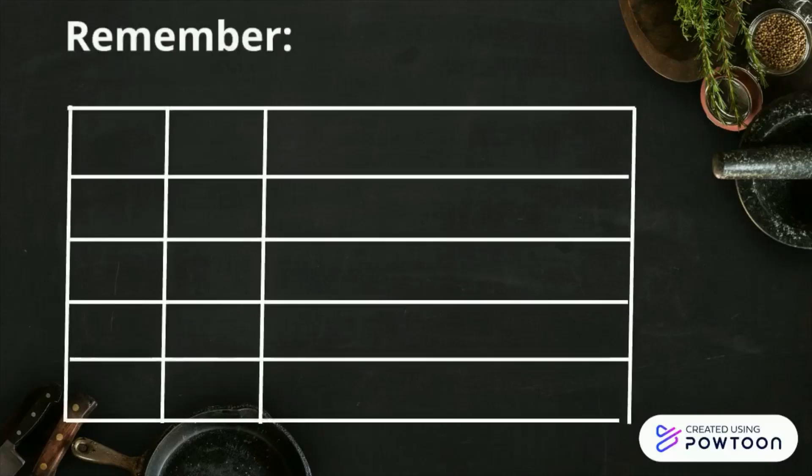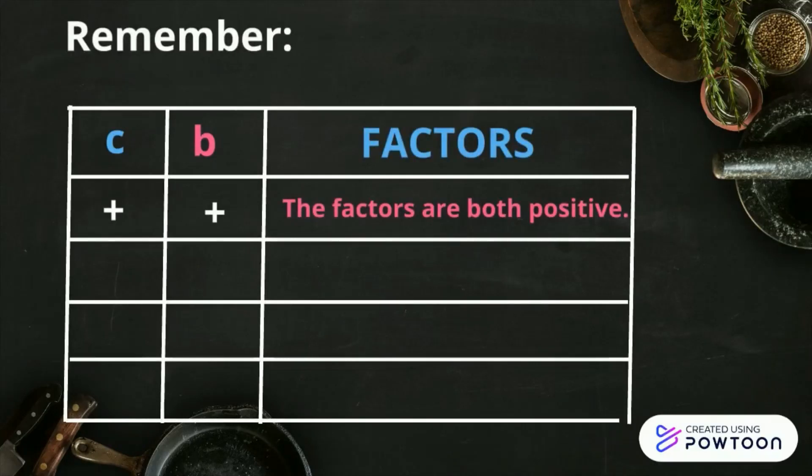Remember the following points. If c is positive and b is positive, the factors are both positive. If c is positive with a negative b, the factors are both negative.